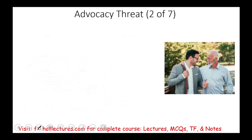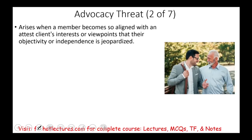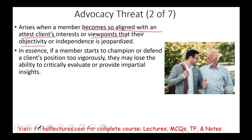The second threat is the advocacy threat — it's basically the opposite of the first one. If the first threat is about having issues with the client or your organization, here you're becoming too cozy. It arises when a member becomes so aligned with the attest client or their viewpoint that your objectivity or independence becomes jeopardized. Rather than having a problem with them, you're getting very close and advocating their position. If a member starts to champion or defend the client's position too vigorously, they may lose their ability to critically evaluate and provide impartial insights, which would compromise your integrity.